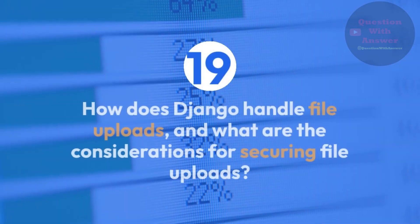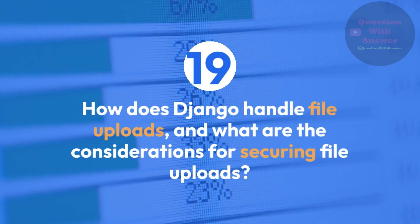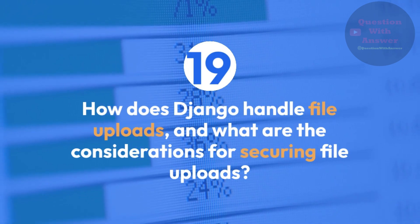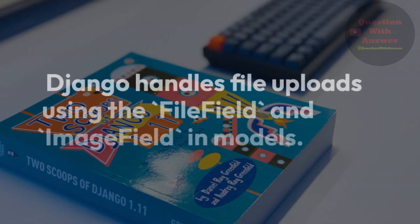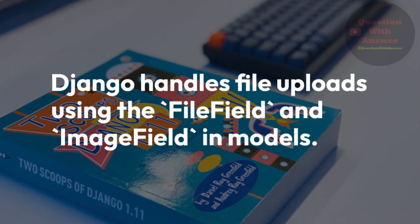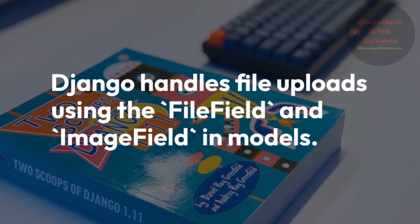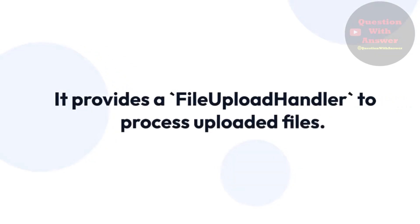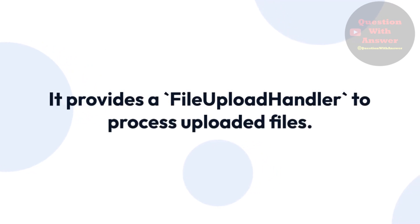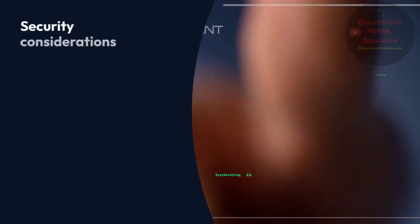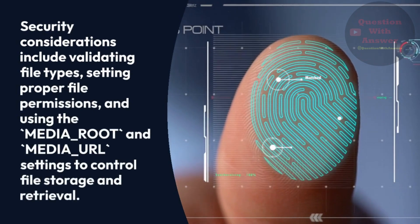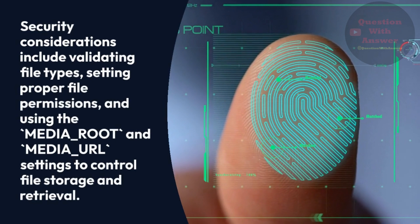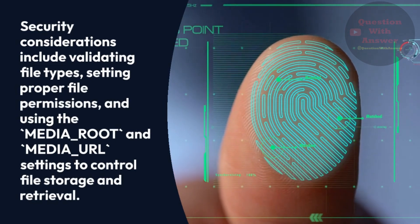Question 19: How does Django handle file uploads, and what are the considerations for securing file uploads? Answer: Django handles file uploads using the FileField and ImageField in models. It provides a file upload handler to process uploaded files. Security considerations include validating file types, setting proper file permissions, and using the MEDIA_ROOT and MEDIA_URL settings to control file storage and retrieval.